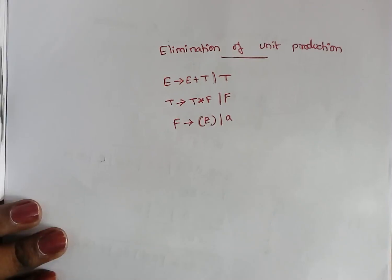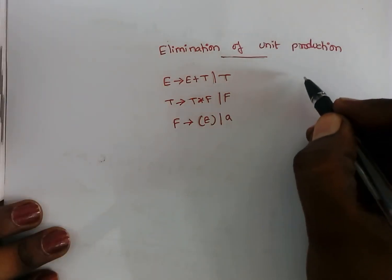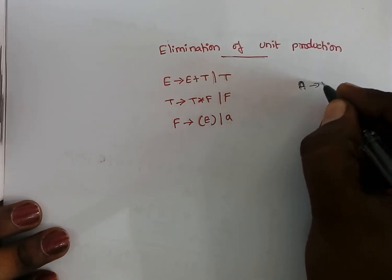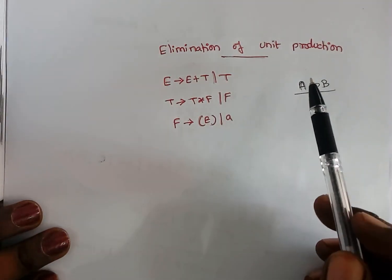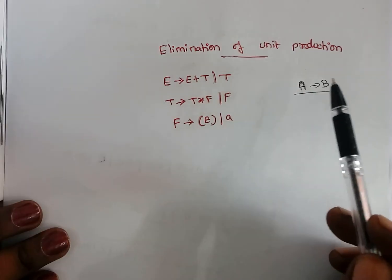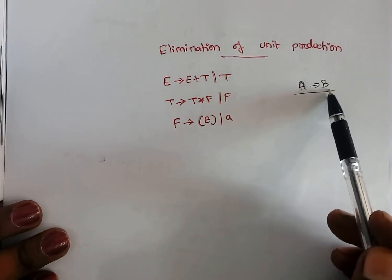Welcome back. Now we will see how to eliminate a unit production. Elimination of unit production is very simple. First I will see what is a unit production and the reason why we want to eliminate it. A unit production is when you have a production like a variable tends to another variable. When you have the structure of a variable tends to a single variable alone, we call that a unit production.